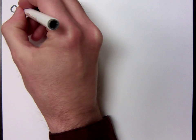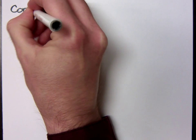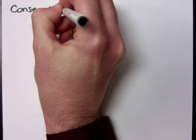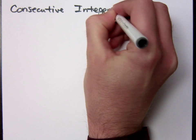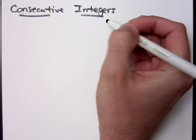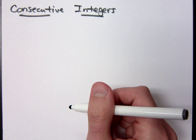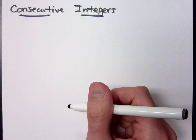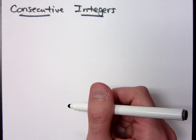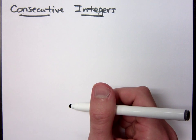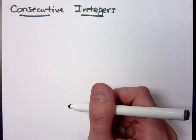For the next word problem we're going to encounter, we need to understand what it is to be consecutive integers. What does it mean to be consecutive, first of all? Consecutive means one right after the other, kind of going in the same pattern, one after the other.